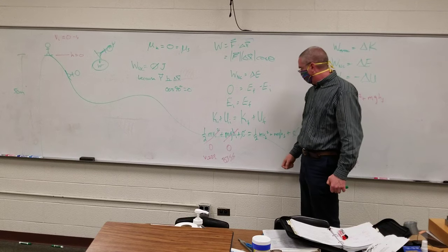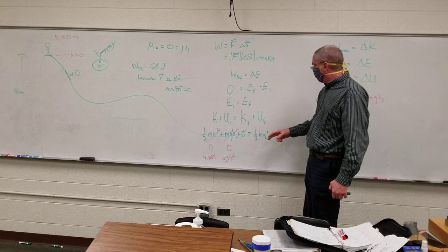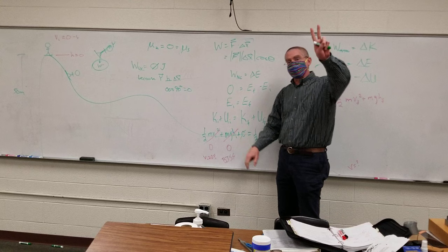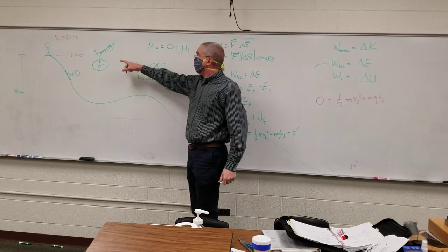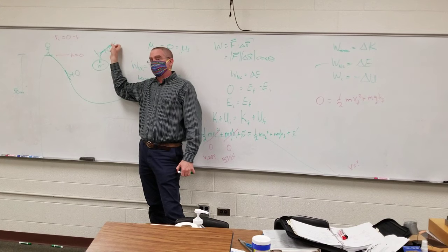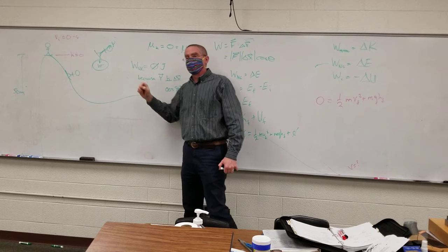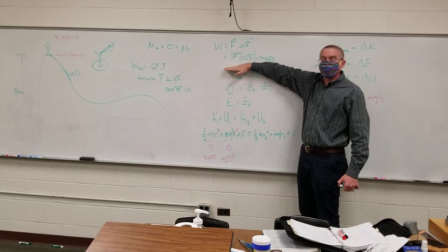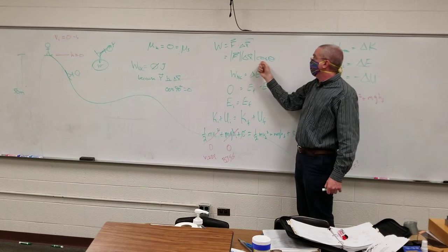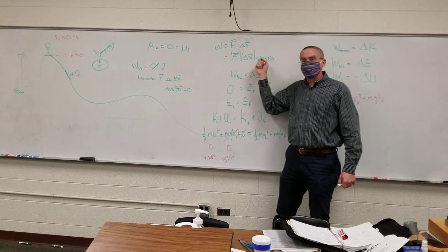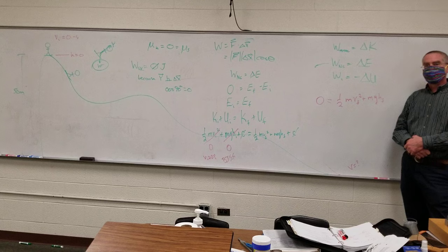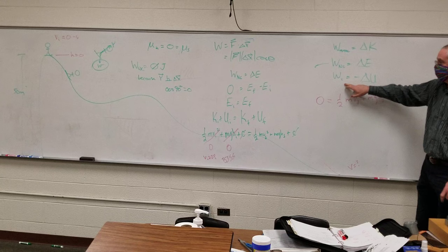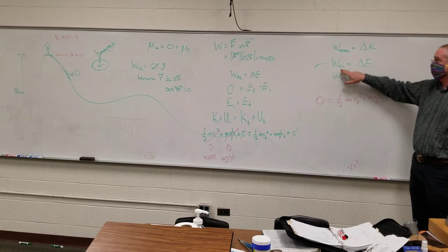Why is W_nc zero? I have only two forces: gravity, which is conservative, and normal force, which is non-conservative. But the normal force is perpendicular — 90 degrees from the displacement — so it doesn't do any work. That was this whole bit. Dot product is magnitude times cosine of the angle between them; if the angle is 90 degrees, it does no work. Non-conservative work is the only thing we've established as zero.